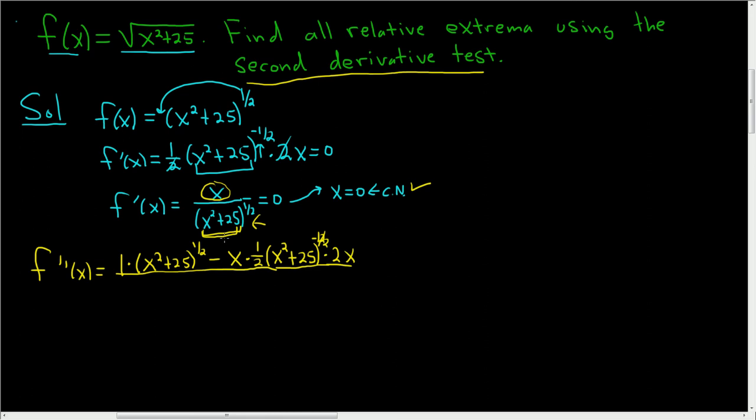And all of this is being divided by this thing squared, so that would just be x squared plus 25. Do we set this equal to zero? No. We find the second derivative and we plug in the critical number. That's it.